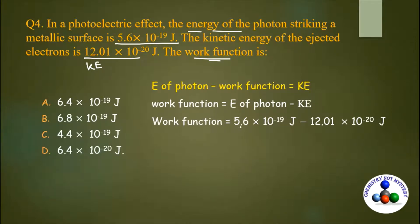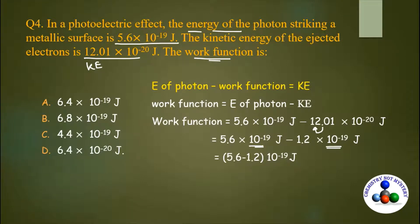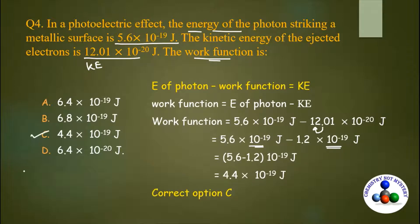Work function = 5.6 × 10⁻¹⁹ J − 12.01 × 10⁻²⁰ J. Shifting the decimal, 12.01 × 10⁻²⁰ becomes 1.2 × 10⁻¹⁹ J. Since the powers are common, we get (5.6 − 1.2) × 10⁻¹⁹ = 4.4 × 10⁻¹⁹ joules. Option C is the correct answer.